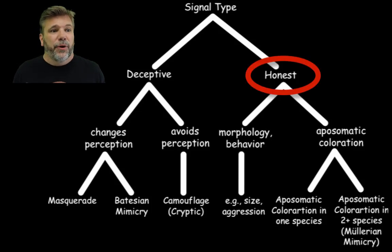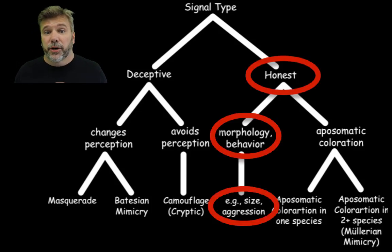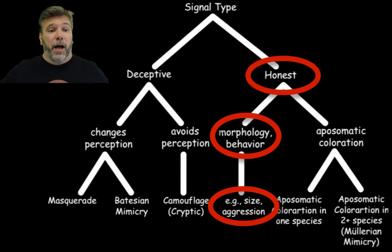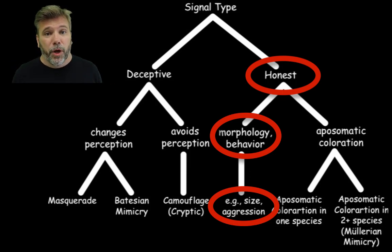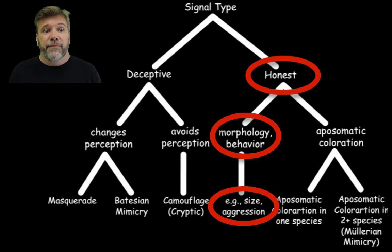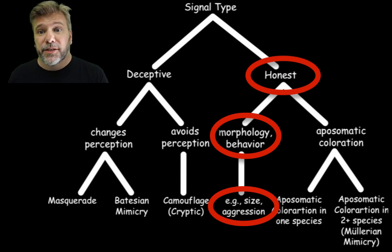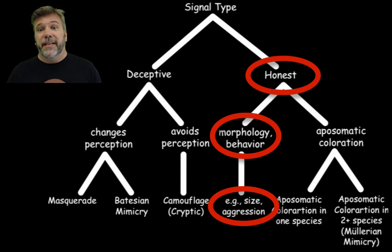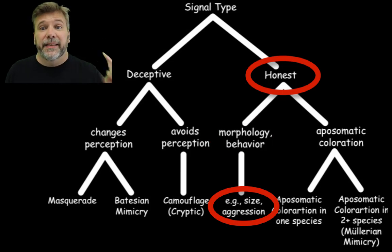Finally, thinking about honest signals more broadly: things like size and aggressiveness can also come into play. Size is the most obvious — a big thing is perceived as much more dangerous than a small thing, given the relative size range for a species. That is an honest signal. Even between species: a big bird trying to eat a smaller insect — that insect sees the bird and recognizes 'that's a big thing that could eat me, that's dangerous.' That is an honest signal.